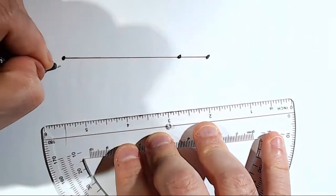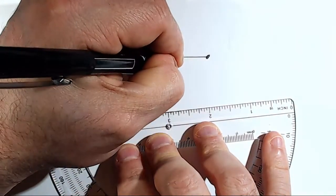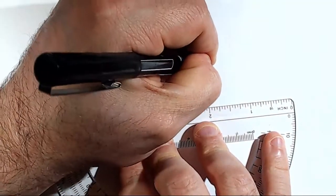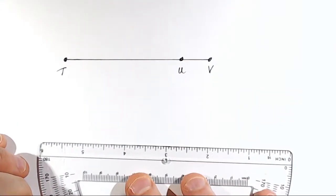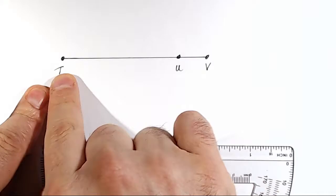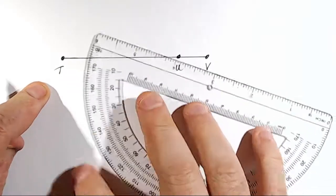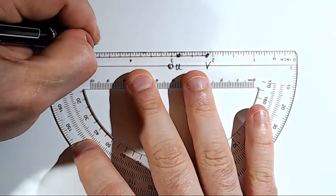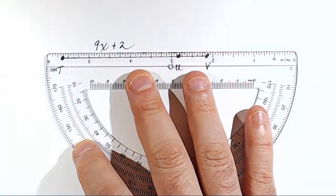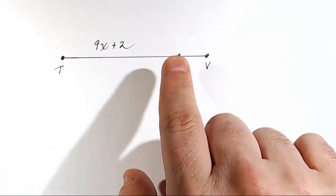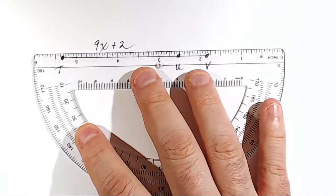Those points are labeled T, U, and V. All right, so we're given some information about these segments. We're given that the distance from T to U is 9x plus 2. We're further given that the distance from U to V is just 5.